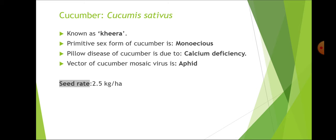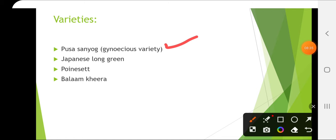This is why inbreeding depression is not found in cucurbits. Generally, inbreeding depression is found in cross-pollinated crops, but since the primitive sex form of cucumber is monoecious, no inbreeding depression occurs on selfing. Pillow disease of cucumber is due to calcium deficiency. Vector of cucumber mosaic virus is aphid. Seed rate is 2.5 kg per hectare. Pusa Sanyog is a gynoecious variety of cucumber.